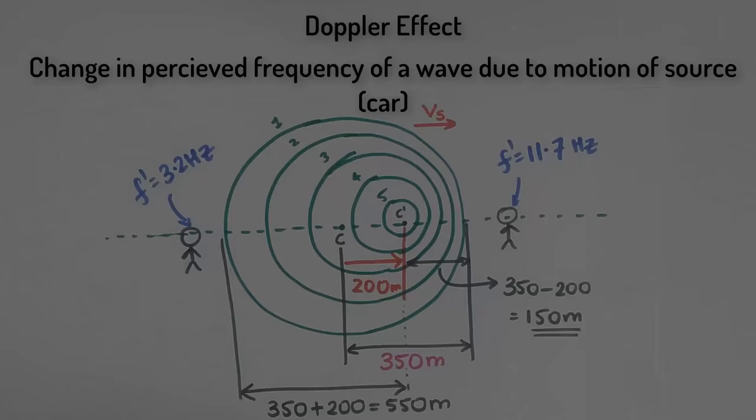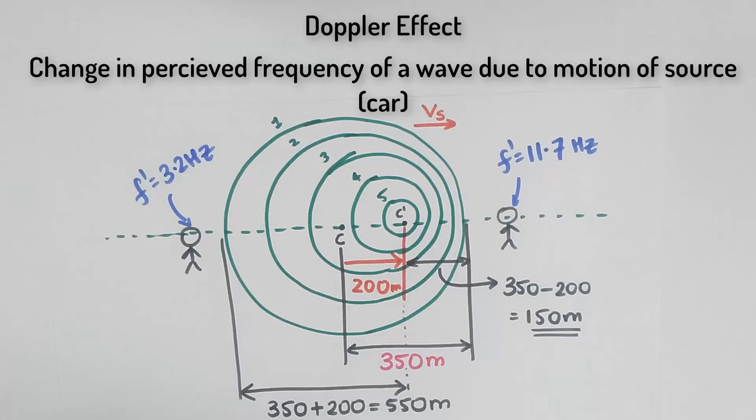Hence, because the source was moving with respect to me, the listener, the wavelength changed, and this caused a change in the perceived frequency. This effect is what we call the Doppler effect, named after the Austrian physicist Christian Doppler.